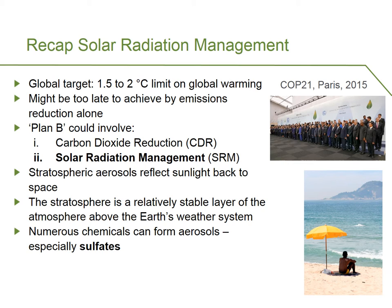Is there a plan B? Well, yes, there are plan B's and they basically fall in two main categories. The first category is carbon dioxide reduction, CDR. And the second category, which is what we're talking about today, is solar radiation management, SRM.